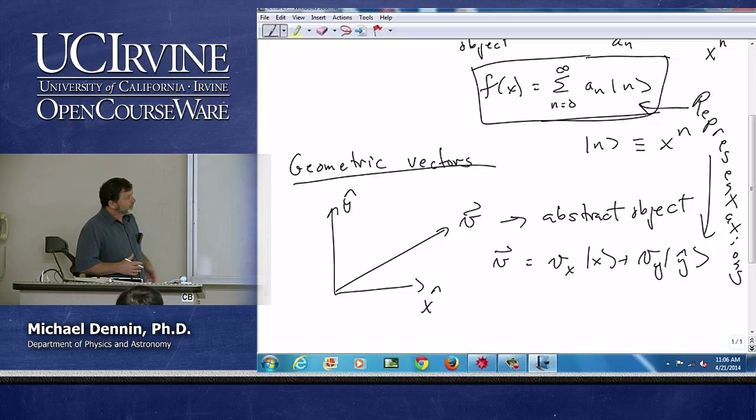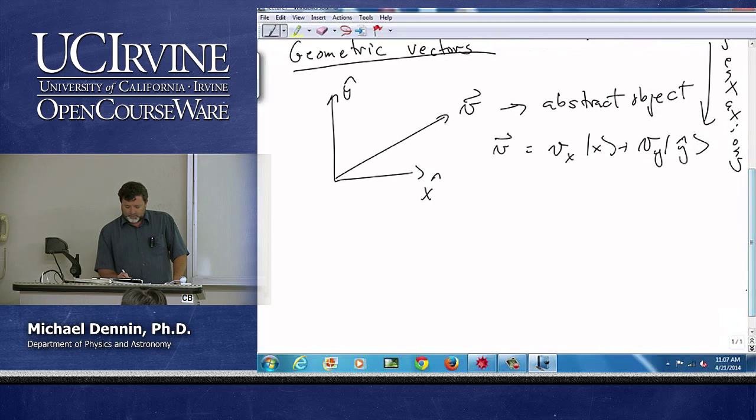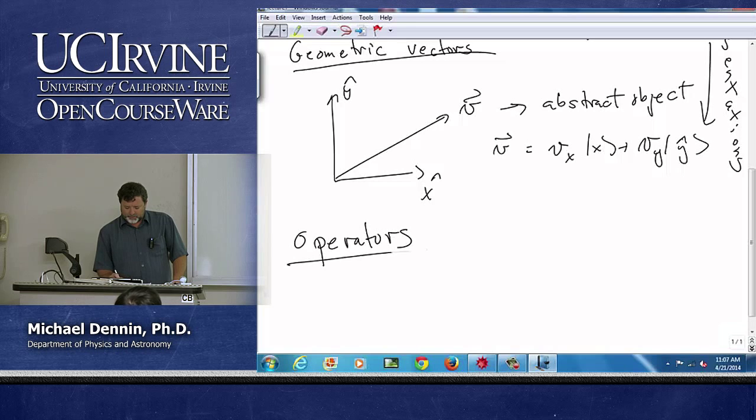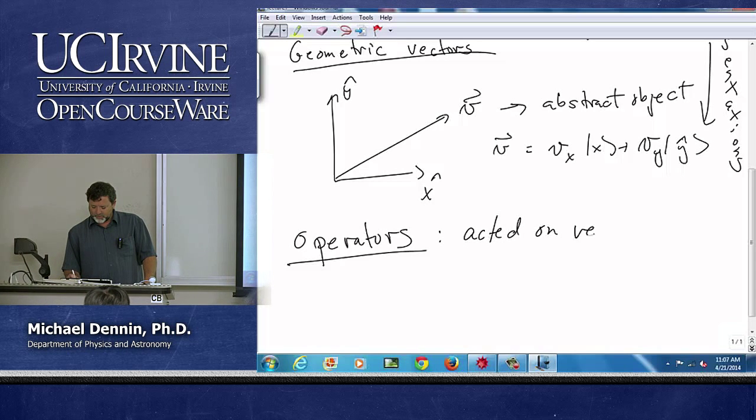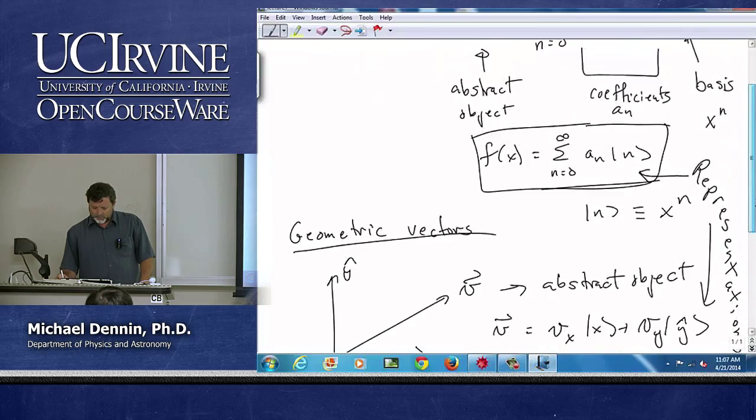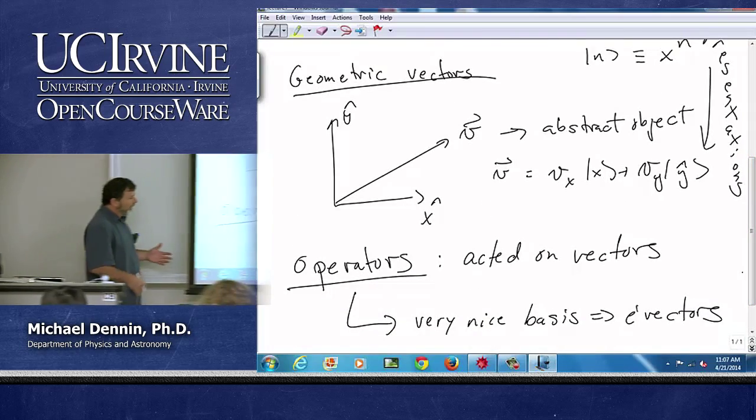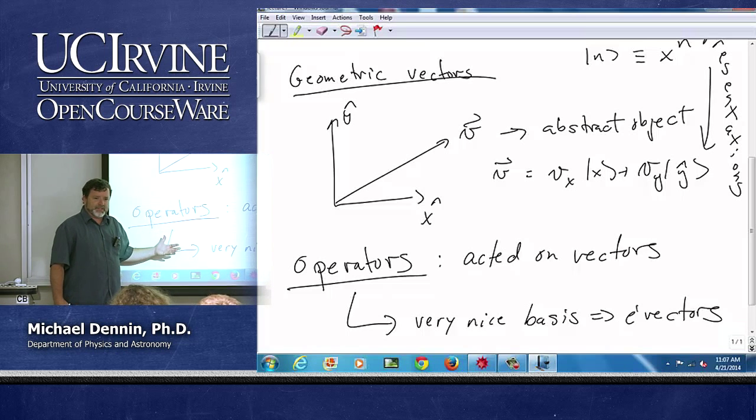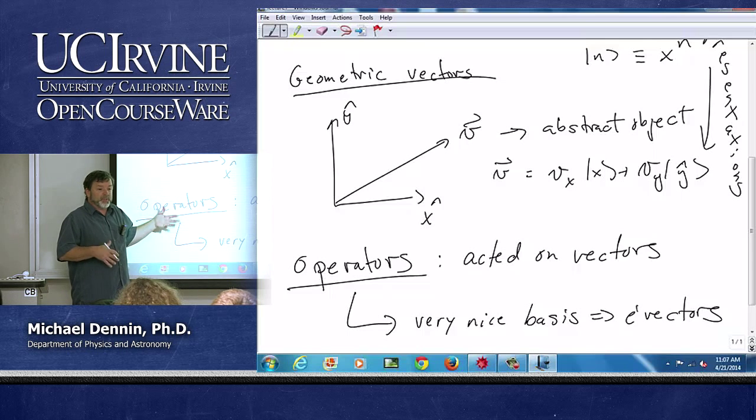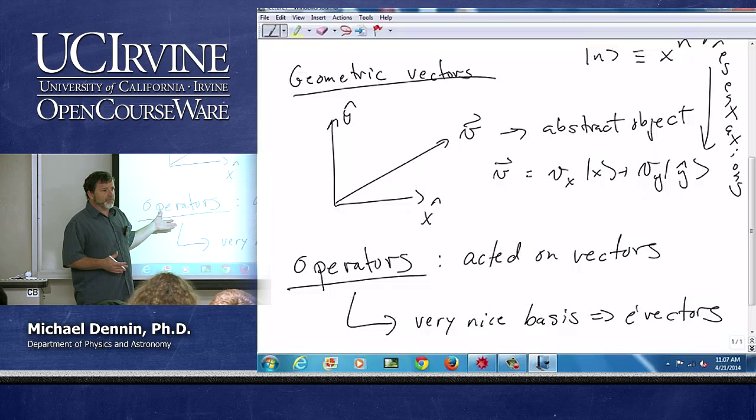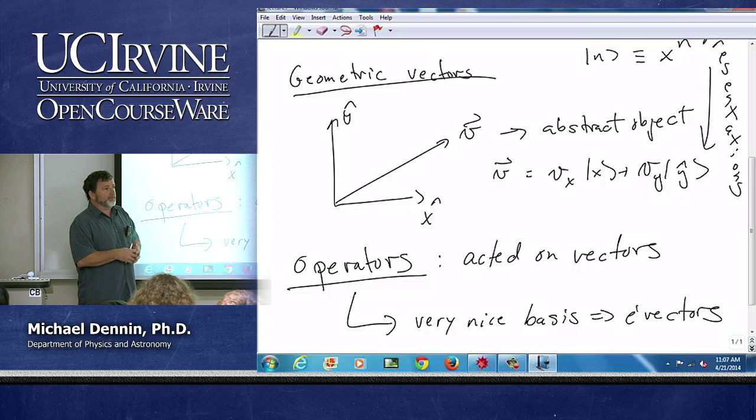And then the third piece we did is we said, one of the things we want to do with these abstract objects is change them. So we talked about operators that acted on our vectors. We saw that for particular operators, we could get a very nice basis by using the eigenvectors. So that kind of brought all of this stuff together. And underlying all of it, if we're going to do quantum mechanics, if we're going to do physics, the relevant operators are Hermitian, the relevant things are complex numbers. So understanding complex algebra, how to manipulate i, take square roots of i, do all that good stuff, think about phase, was relevant.